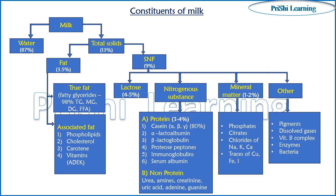I have tried to explain milk composition in a flow chart. Milk is divided into two parts: water (87%) and total solids (13%). Total solids are further divided into fat (3.5%) and solid non-fat, SNF (9%). Fat is divided into true fat and associated fat.